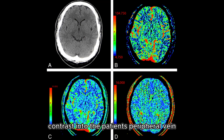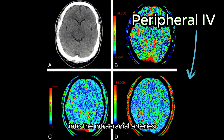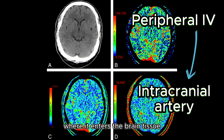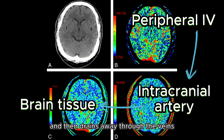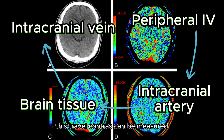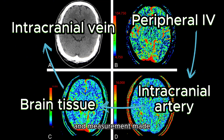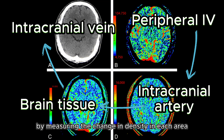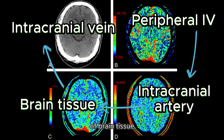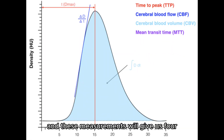To begin, we inject contrast into the patient's peripheral vein. The contrast then moves with the circulation into the intracranial arteries, where it enters the brain tissue and then drains away through the veins. This travel of contrast can be measured with multiple images acquired over time, by measuring the change in density in each area of brain tissue. This is often described with a graph, and these measurements give us four important parameters.